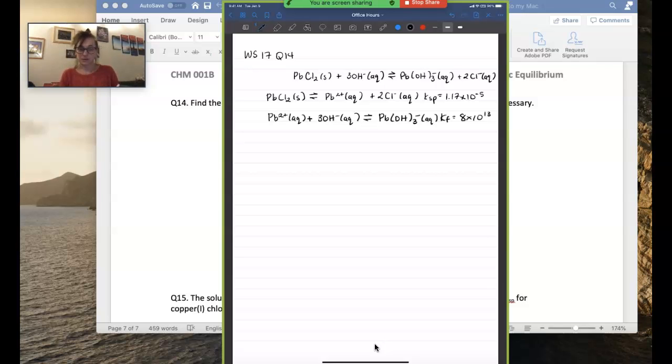And so we want to see if these two equations add up to give us the overall equation in which we want to find the equilibrium constant for. And so remember to cancel out like species on different sides of the arrow. So for example here lead 2+ would cancel out between the two when we add them up. And that is all we have.